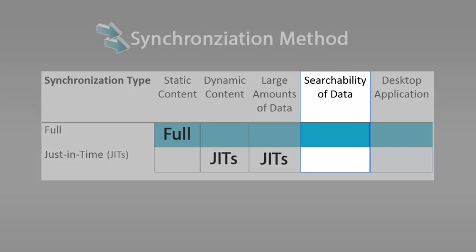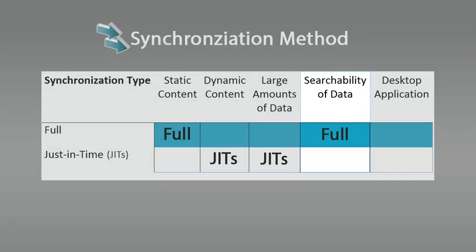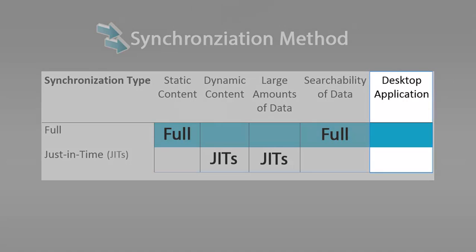Does the data need to be searchable? If so, you must do a full synchronization, because content can be indexed only after it is synchronized, and you cannot guarantee that all content will be synchronized when using only just-in-time synchronization. Does the content need to be available from the Filer desktop application? If it does, you must use full synchronization.